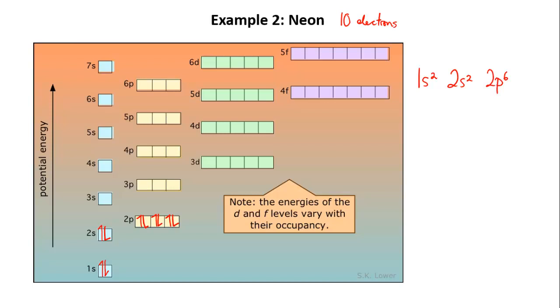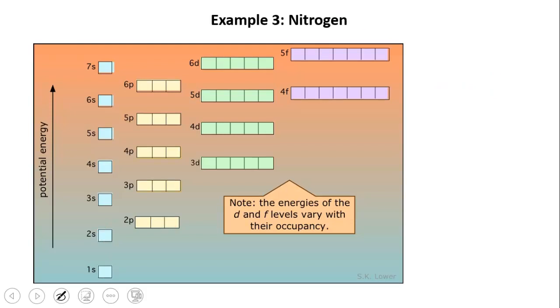Okay example number three, nitrogen. Nitrogen is the seventh element so seven electrons. As before we fill up the 1s and the 2s orbitals and now we have three electrons left. Perhaps the obvious thing to do at this point would be to completely fill one of the 2p orbitals and half fill another. But this is where the third rule comes in.